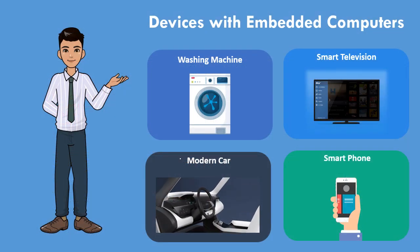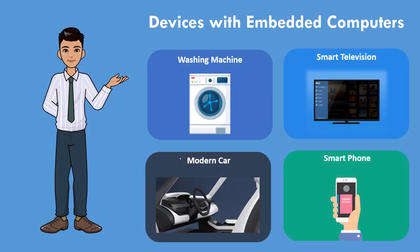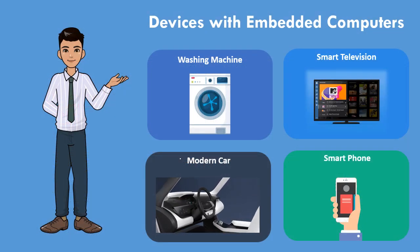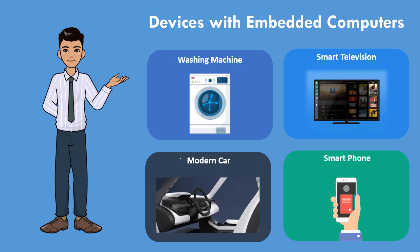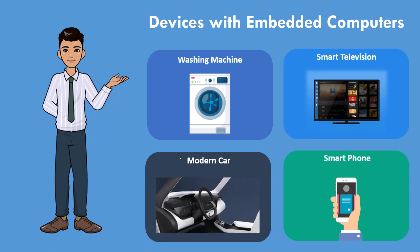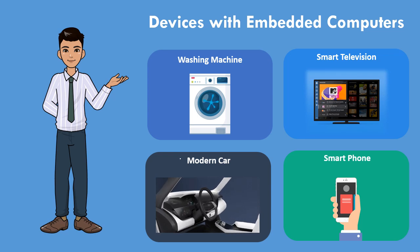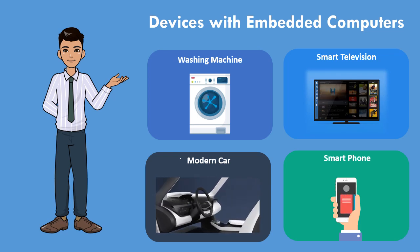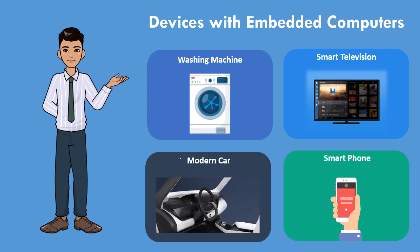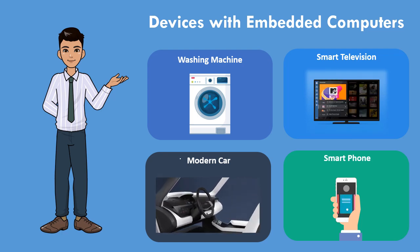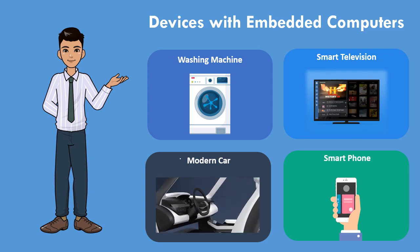Devices with embedded computers: equipment like washing machines, mobile phones, modern motor vehicles, and modern televisions are operated by computer programs. Computer programs included in such equipment are known as embedded computer systems.